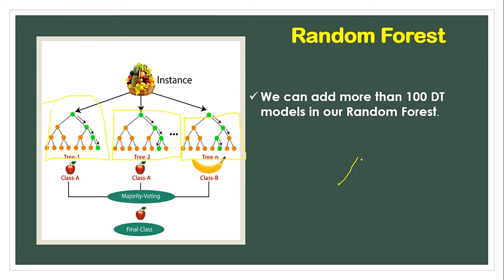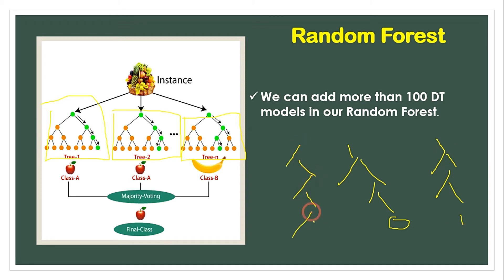If you look at the decision trees, you will find the final nodes. From the final nodes, you will find the majority class — majority voting. So here: first tree, second tree, third tree. There can be more than 100 or 200 trees.